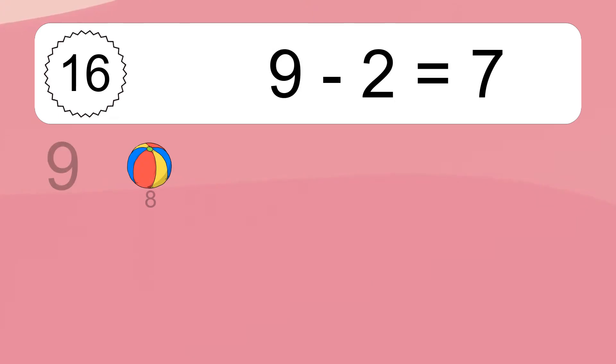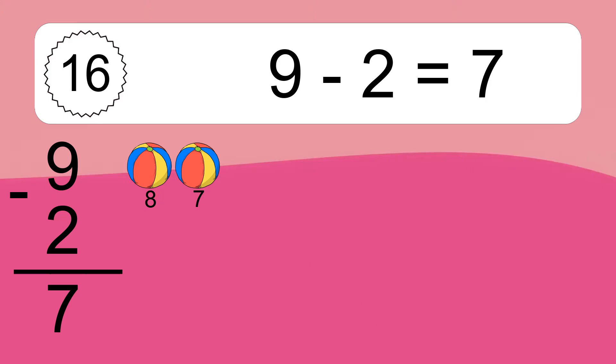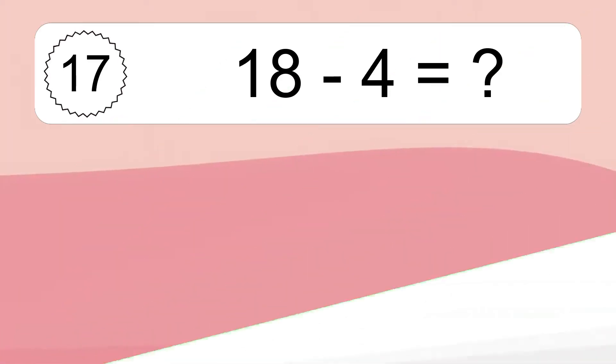9 minus 2 equals what? 9 minus 2 equals 7. Let's count it: 8, 7.